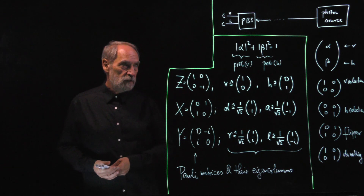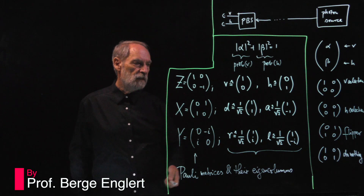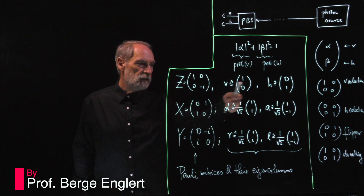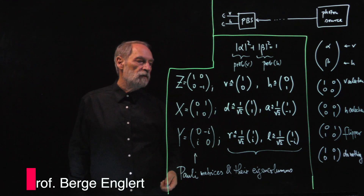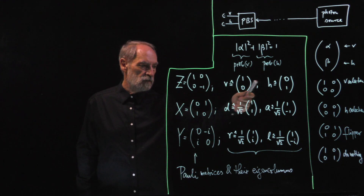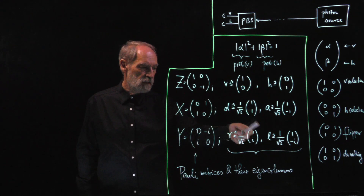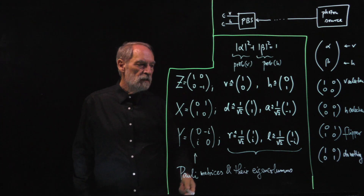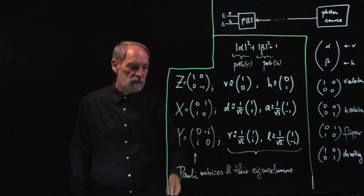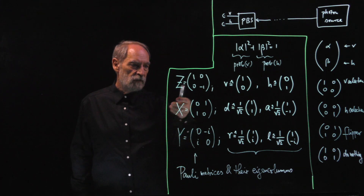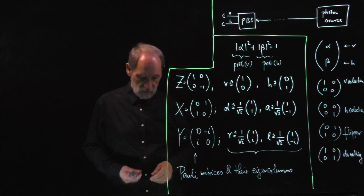At the end of the last lecture, we had established that the different binary alternatives we consider for a photon polarization — vertical versus horizontal, diagonal, anti-diagonal, right-handed, left-handed circular polarization — come with matrices that we call x, y, and z, which have eigenvalues plus and minus 1 for the various polarizations.